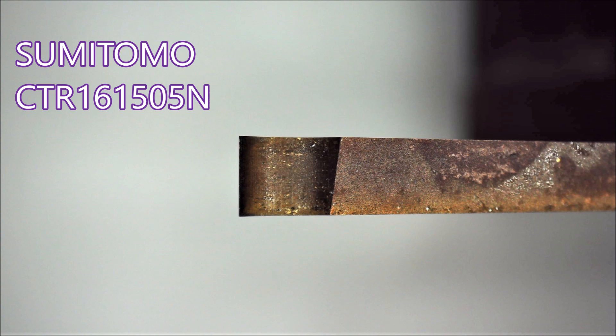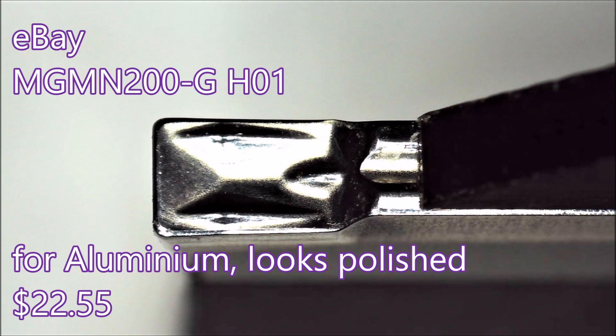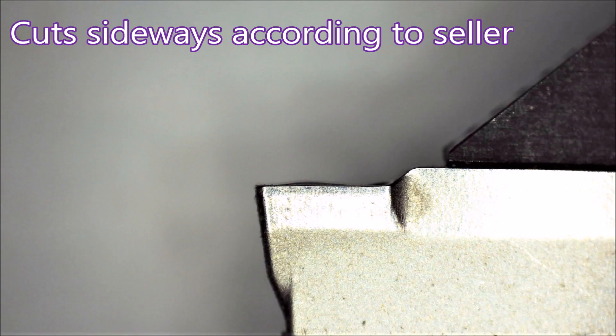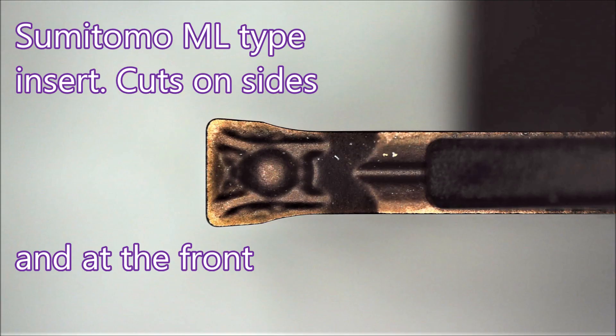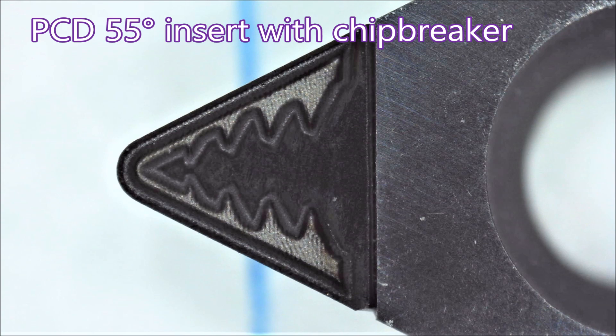This insert looks polished, supposedly for aluminum with the ability to cut sideways. Might need a video to compare it with this one from Sumitomo which actually does cut sideways. You can see this cutting edges left, right, and on the front. This is a 55 degree diamond insert that I've had for quite some time now, but I've not had a chance to test it.